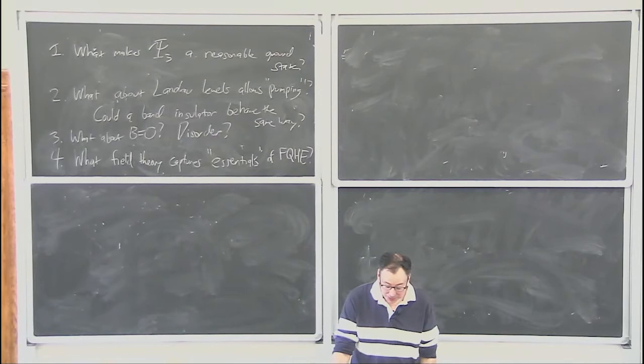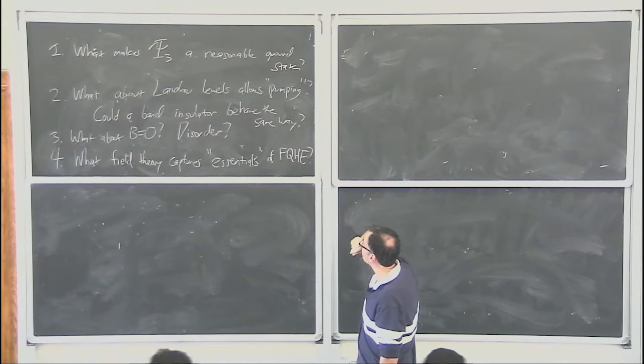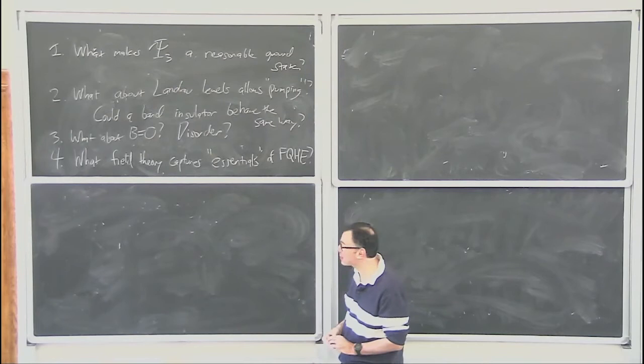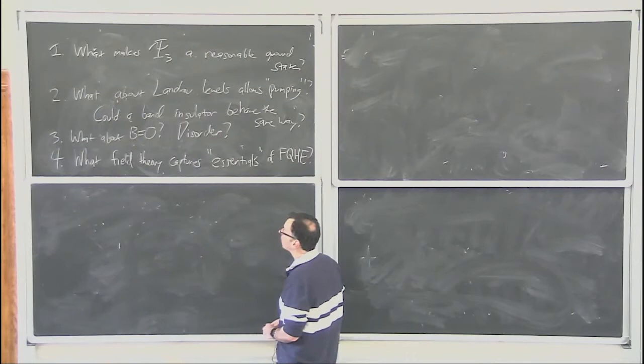Where we're going today is to try to answer at least the first few of these questions. I don't know if we'll get to number four, but if not we'll get to it tomorrow. Question number one: I wrote down this wave function and said it has a couple of nice properties, but I haven't yet said why this is a reasonable guess for the ground state of interacting electrons in the lowest Landau level at density one third. We'll give a quick picture due to Haldane that makes the wave function more believable.